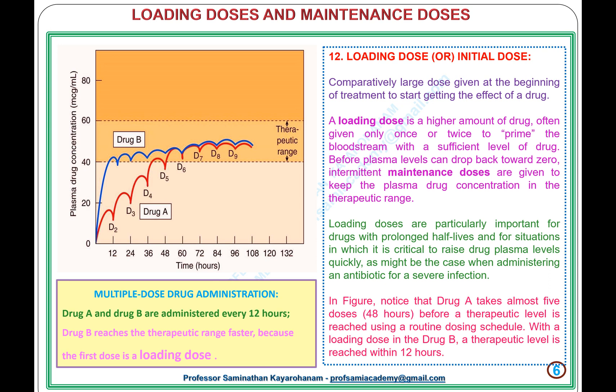In the figure, notice that Drug A takes almost 5 doses before a therapeutic level is reached using a routine dosing schedule. With a loading dose in Drug B, a therapeutic level is reached within 12 hours. In the figure of multiple dose drug administration, Drug A and Drug B are administered every 12 hours; Drug B reaches the therapeutic range faster because the first dose is a loading dose.